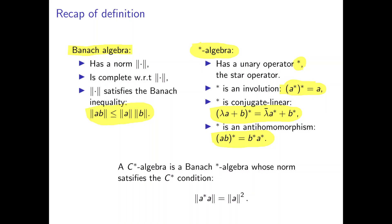Once we have a Banach star algebra, we can talk about the C-star condition. The C-star condition states that the norm of a-star times a should equal the norm of a squared. When we have a Banach star algebra whose norm satisfies this condition, then we have a C-star algebra.